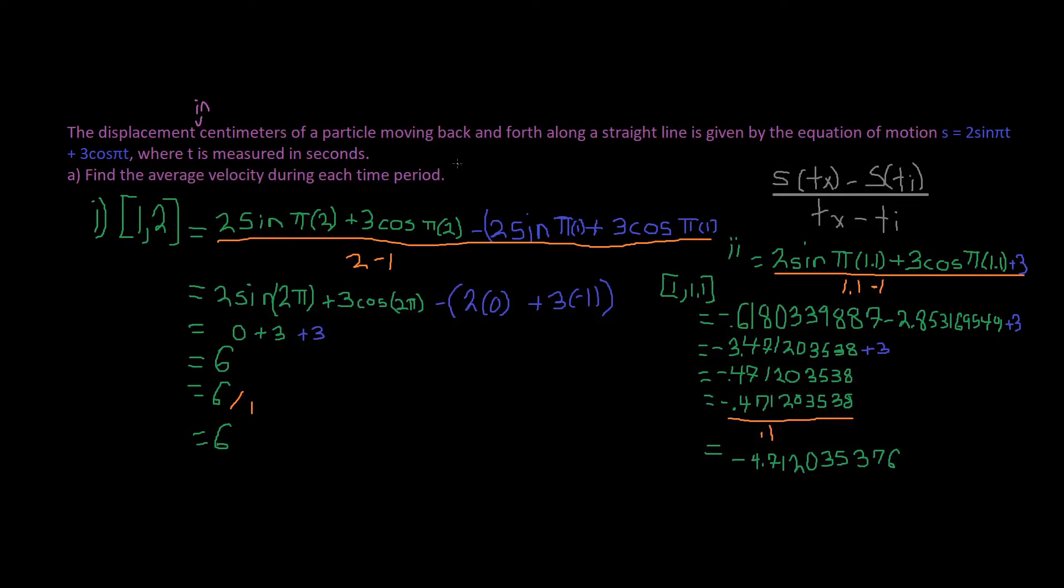Alright, so the displacement in centimeters of a particle moving back and forth along a straight line is given by the equation of motion S equals 2 sine pi t plus 3 cosine pi t, where t is measured in seconds.